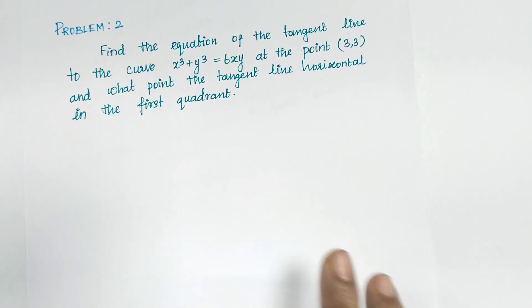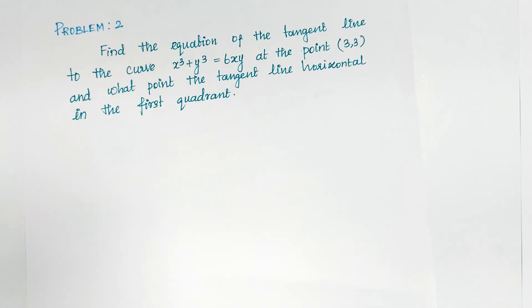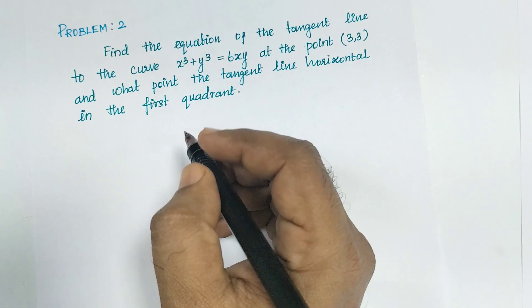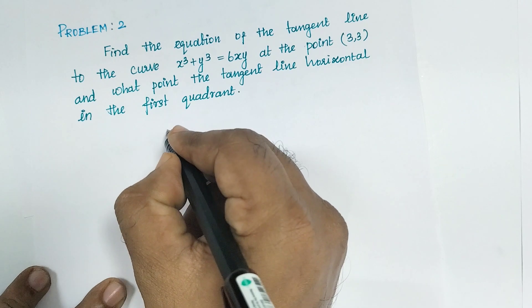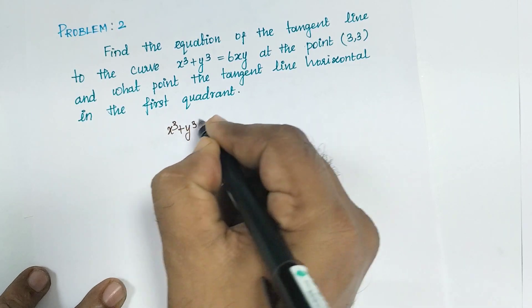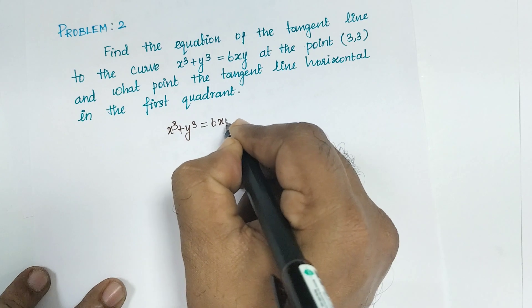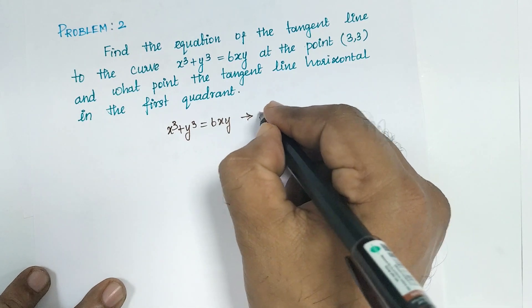Problem number 2: find the equation of the tangent line to the curve x cube plus y cube equal to 6xy at the point 3 comma 3, and at what point is the tangent line horizontal in the first quadrant. First quadrant means you will get positive points. The given equation is x cube plus y cube equal to 6xy, which is equation number 1.